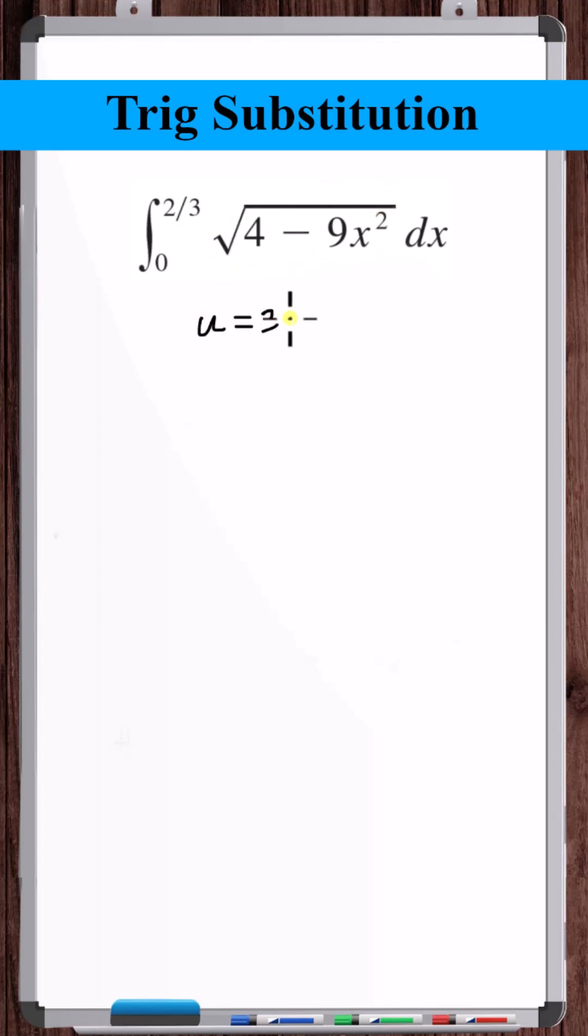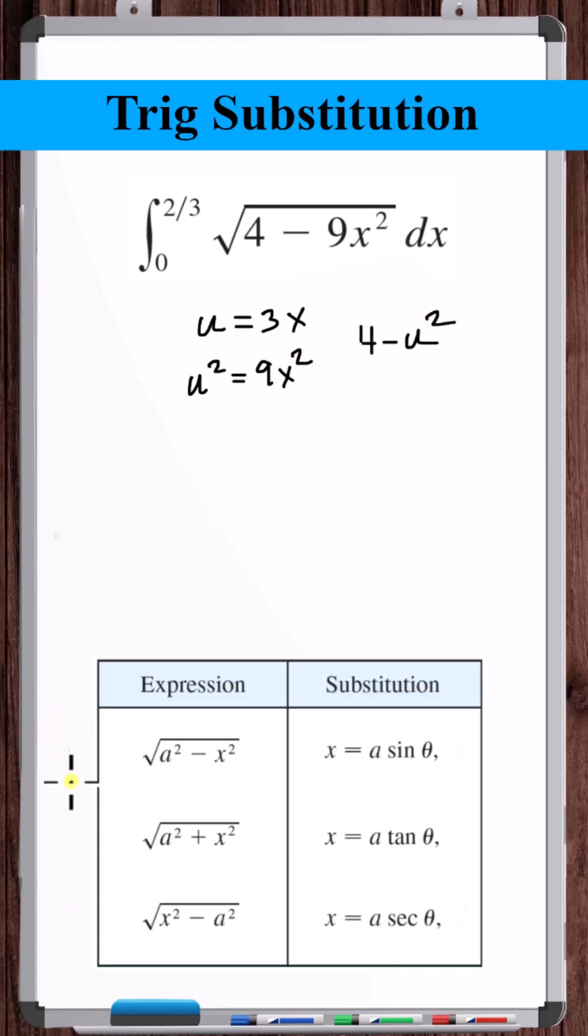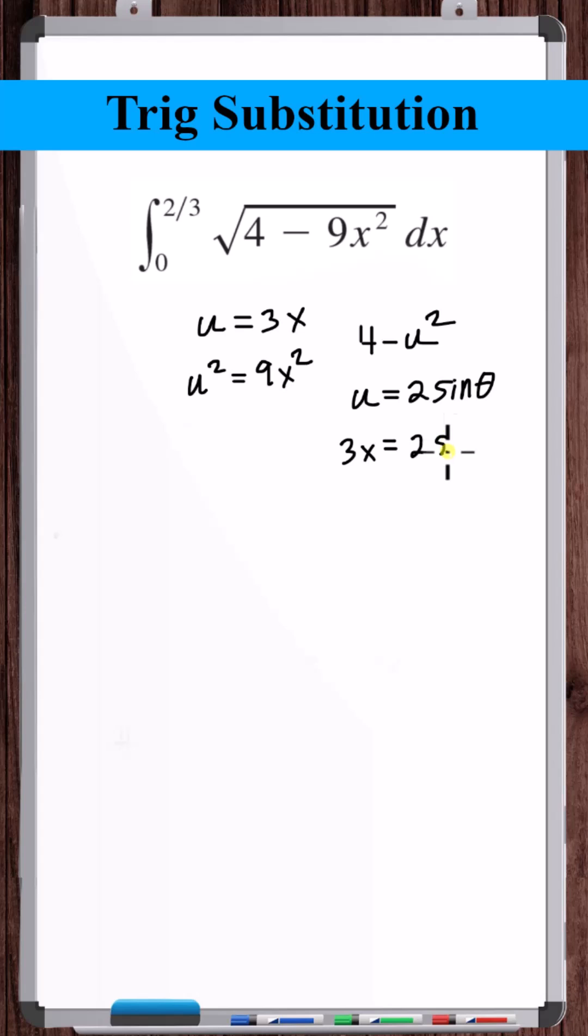So if we say that u is equal to 3x, then u squared is equal to 9x squared. If we look at the three options for a trig substitution, we've got this form. So the substitution we want to make is that the variable is equal to 2 sine theta, but u is equal to 3x.